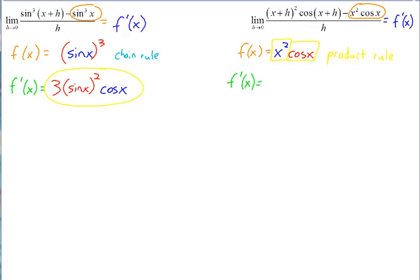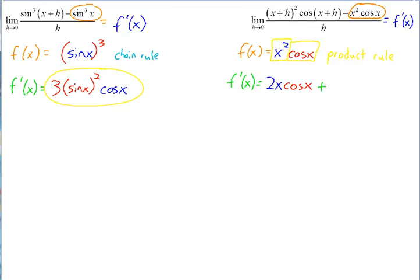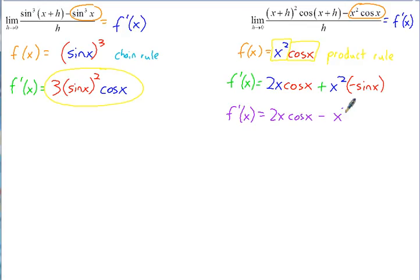Using the product rule: take the derivative of the first function, which is 2x, times the second one as it is, cosine x; then plus the first one as it is, x squared, times the derivative of the second, which is negative sine x. Bringing the negative out front, that simplifies to 2x cosine x minus x squared sine x. That's the derivative of our function, so the limit equals 2x cosine x minus x squared sine x.